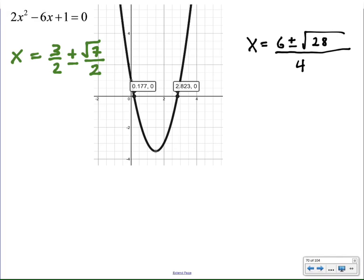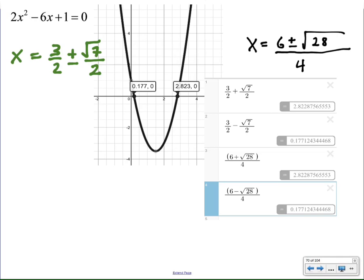What I also did with Desmos is entered in 3 halves plus the square root of 7 over 2 and 3 halves minus the square root of 7 over 2, and I got these two solutions, which match my graphs. And then I also took my quadratic formula solutions, which look a little different. I put those into Desmos, and I got the same two numbers. So this expression must be the same as this expression in value. Now I have to figure out, is there a way that I could prove it without technology?